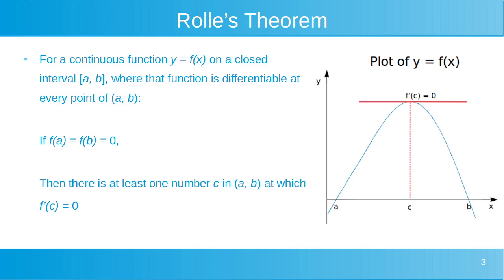If we have a look at the left-hand side of the screen now, at the description of Rolle's Theorem: for a continuous function y equals f on a closed interval from a to b, where that function is differentiable at every point of the open interval from a to b — that means the function has a derivative at those points. Every point of the open interval from a to b refers to every point between a and b, written as open parenthesis, a comma b, closed parenthesis.